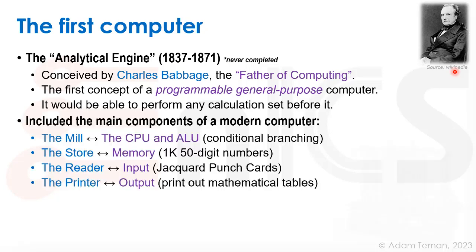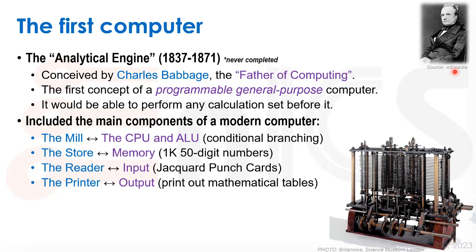When we look at the main components of the analytical engine, it had something called the mill — basically the processor of today, the CPU and ALU — which was the first type of thing with conditional branching, like an if-then-else operation. It had the store, which was the memory, holding 1,050-digit numbers. It had the reader as input, using Jacquard punch cards. And it had the printer, because Babbage came from a background of printing books, so he could print mathematical tables.